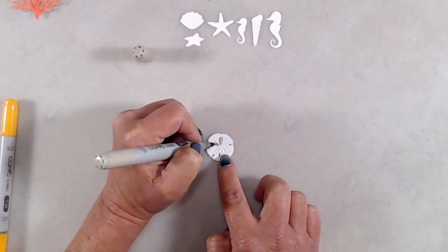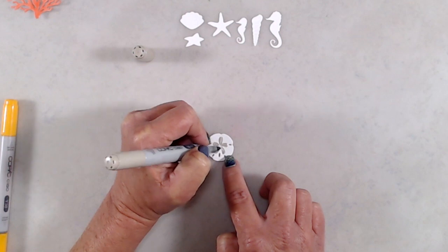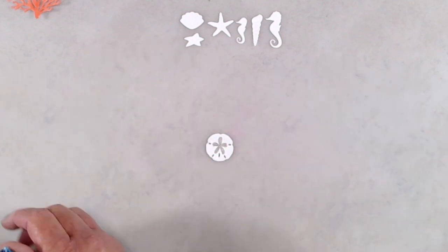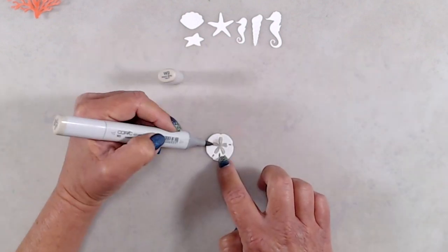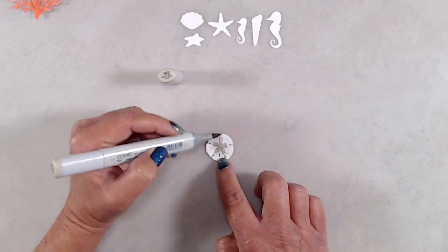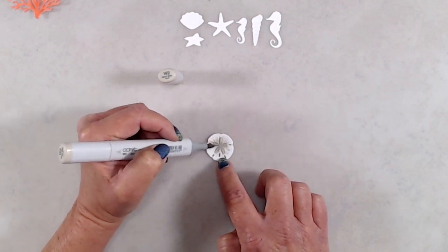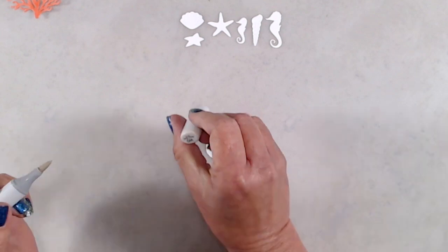I did want to show a couple of the images that I colored in, like the coral and particularly the sand dollar. This die not only cuts it out, but it also does some embossing around that star pattern in the middle of the sand dollar.